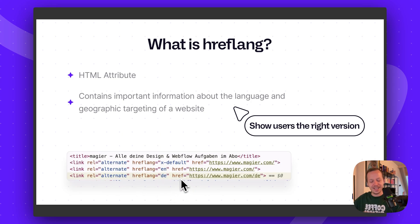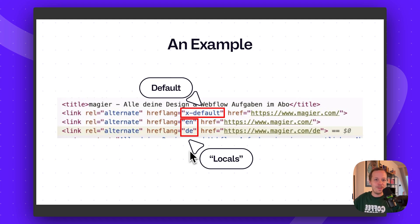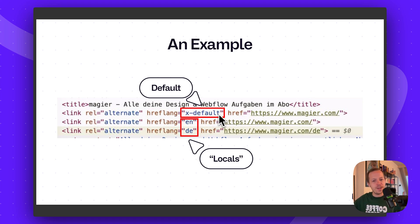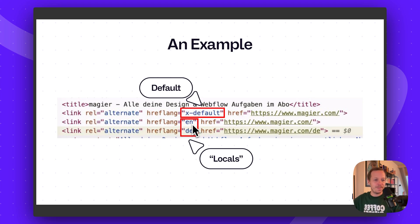Let me show you how it specifically looks. From our own website example, we have three tags. The first is the hreflang tag with the default state. The default state means whenever the search engine or browser doesn't know which specific version to show, they will show this one — in our case, the English version, which makes the most sense since most people speak English. Second is the English version explicitly, where we state: everyone with English as their language settings, please show them this version.